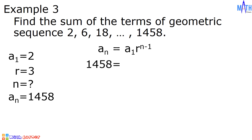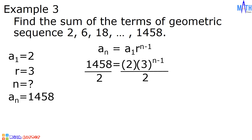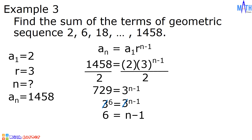Let us substitute all the given values: A sub n is 1458 equals A sub 1 is 2 times 3 raised to n minus 1. We need to isolate 3 raised to n minus 1 by dividing both sides by 2. 1458 divided by 2 is equal to 729, which equals 3 raised to n minus 1. This is an exponential equation, and to solve for n, the bases must be equal on both sides. We can write 729 as 3 raised to 6, so 3 raised to 6 equals 3 raised to n minus 1. Since we have the same base, we have 6 equals n minus 1. Adding 1 to both sides: 6 plus 1 equals 7, and n minus 1 plus 1 equals n. The value of n is equal to 7.